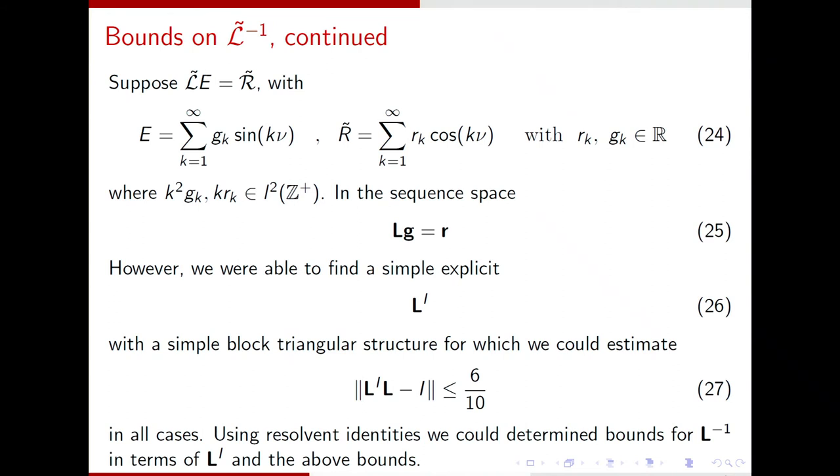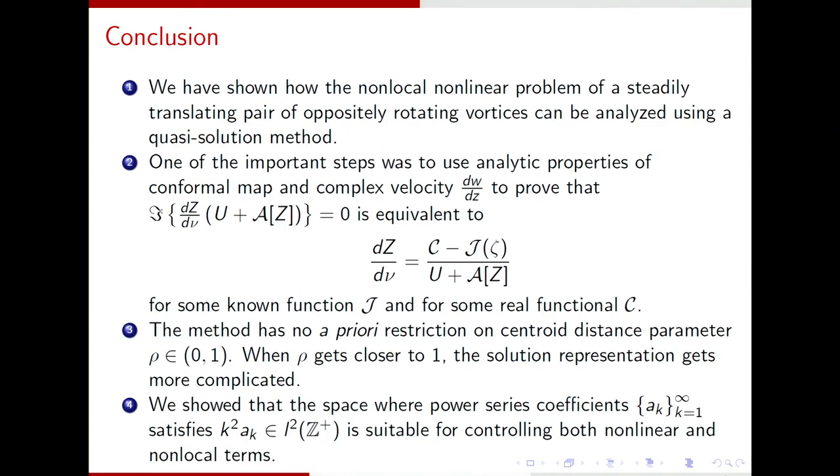So, let me, this is, I'm running out of time, but there is also a trick. You have to find a quasi-inverse. So, you pose this problem in the sequence space. Find an L prime analytically so that L prime times L minus identity is small. You use the resolvent identities to actually find the inverse of L.